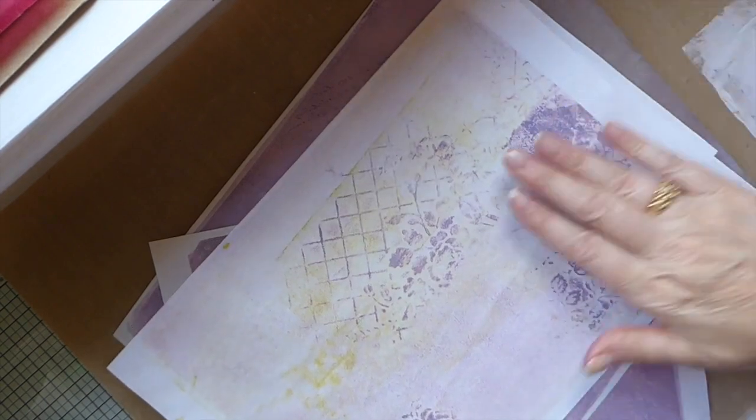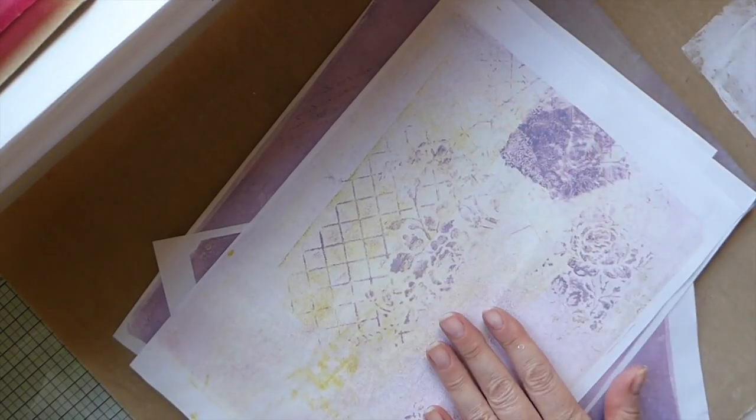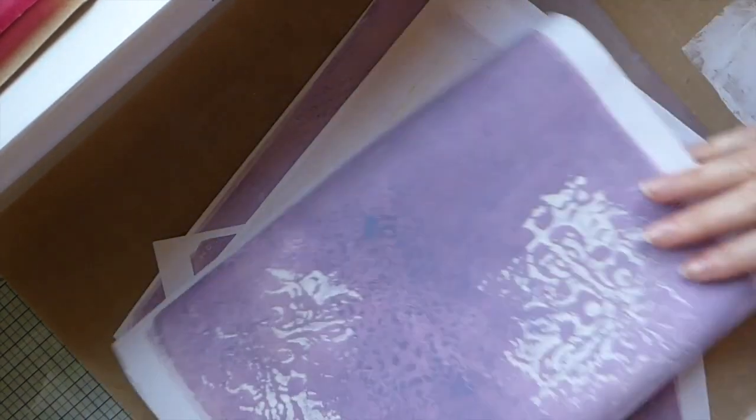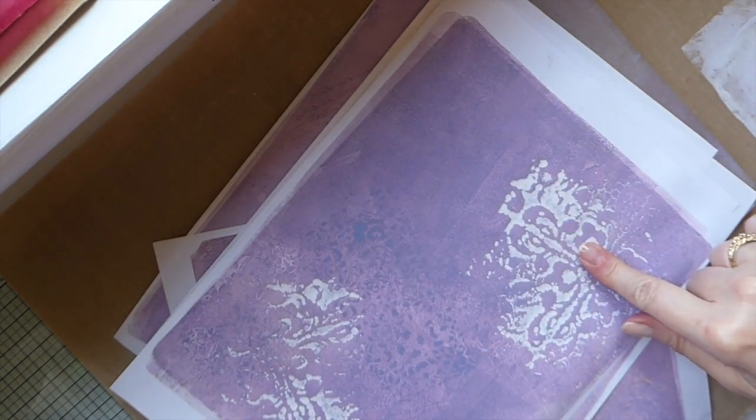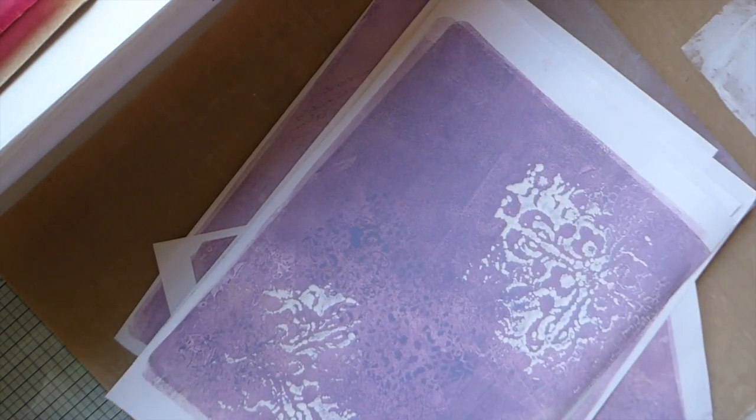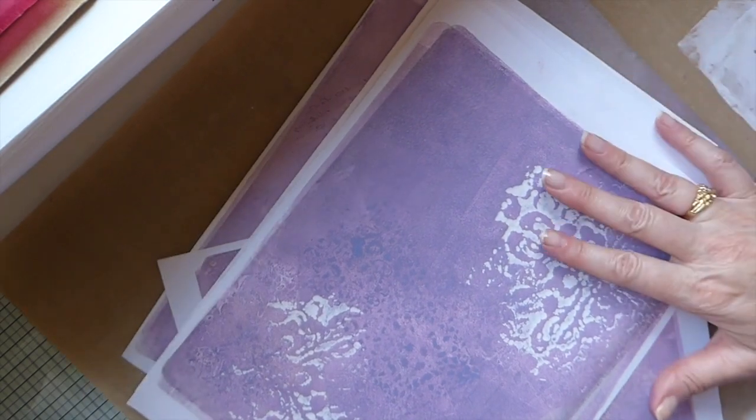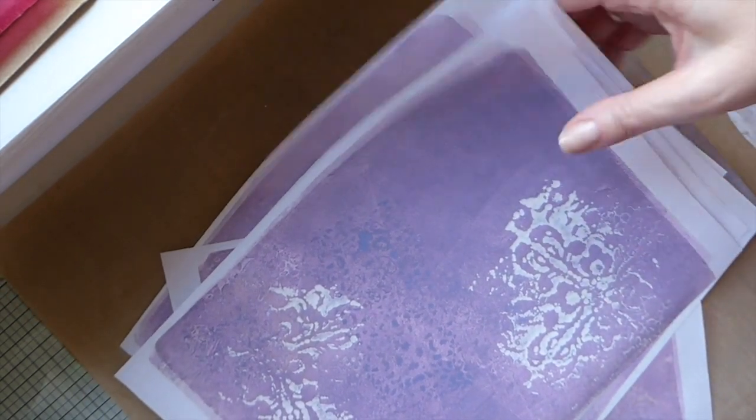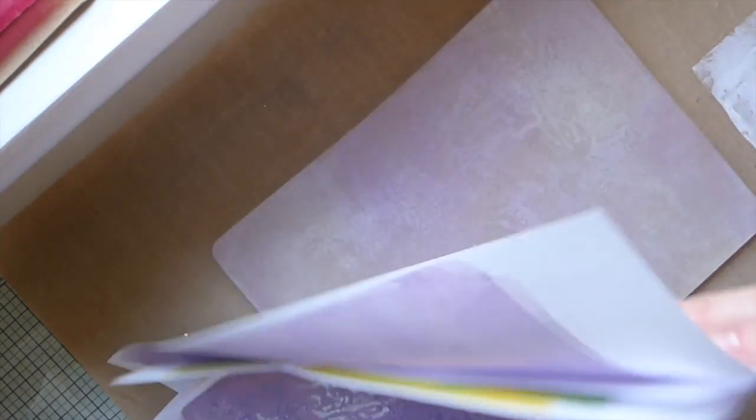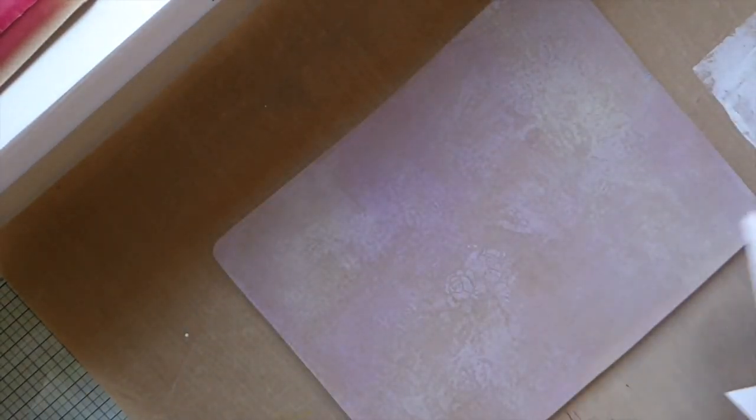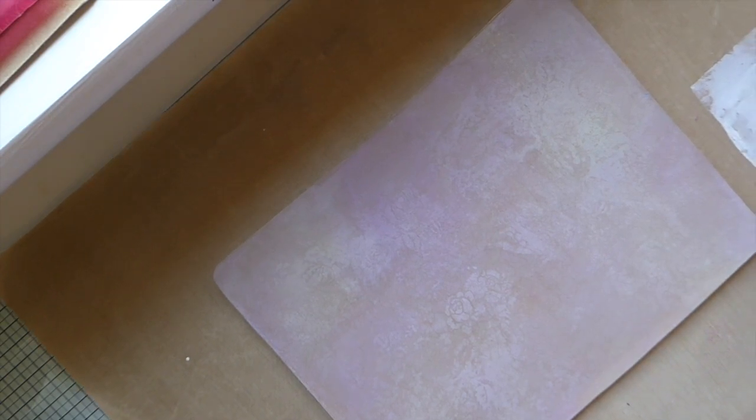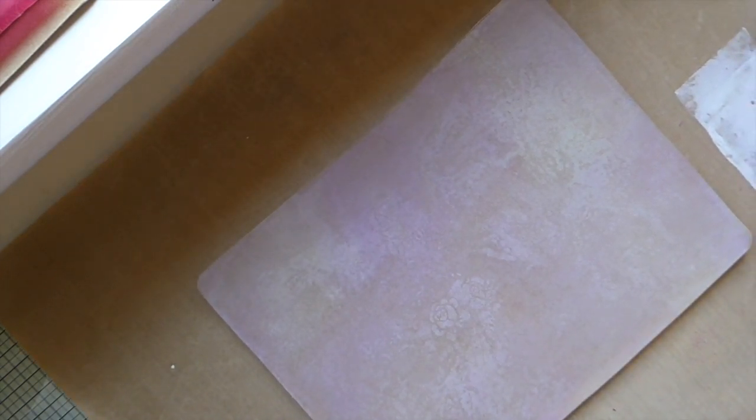This was another one, just kind of playing with that. And then this one. This was using some paint along with the Distress Oxide inks. So I apologize for the camera setup, but this is the only way I knew how to do it. So it's going to be at an angle, unfortunately, and I know there's going to be some shadow, but there's just not much I can do about that, guys.